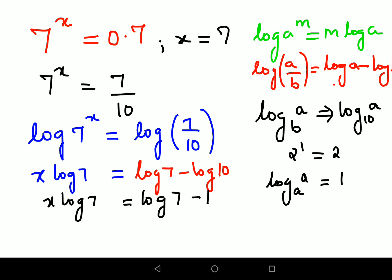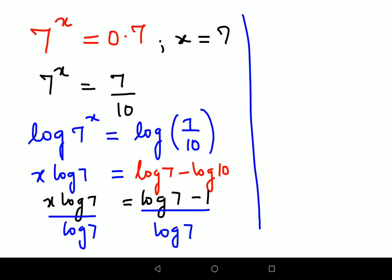Now in order to find the value of x, we will divide both sides by log 7. So now what do you get? This log 7 and log 7 is canceling. So you are left with x equals, and we will split the numerator: log 7 upon log 7 minus 1 upon log 7. As we know, log 7 and log 7 is canceling, so you are just getting 1 minus 1 upon log 7.